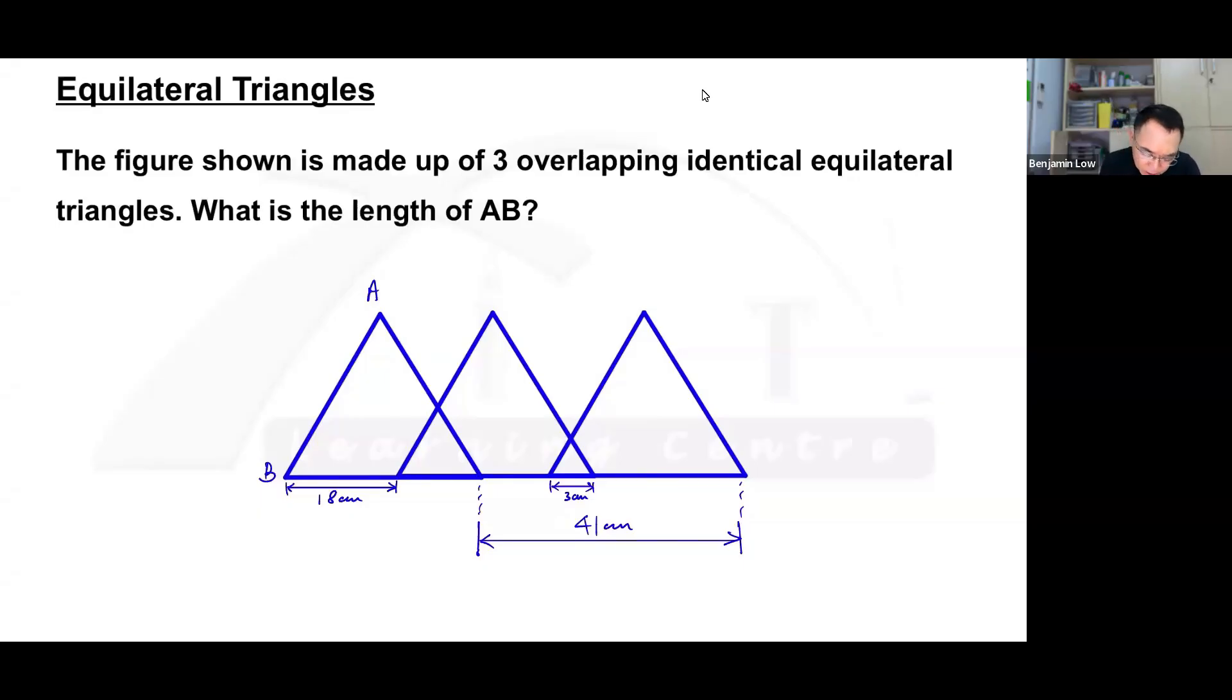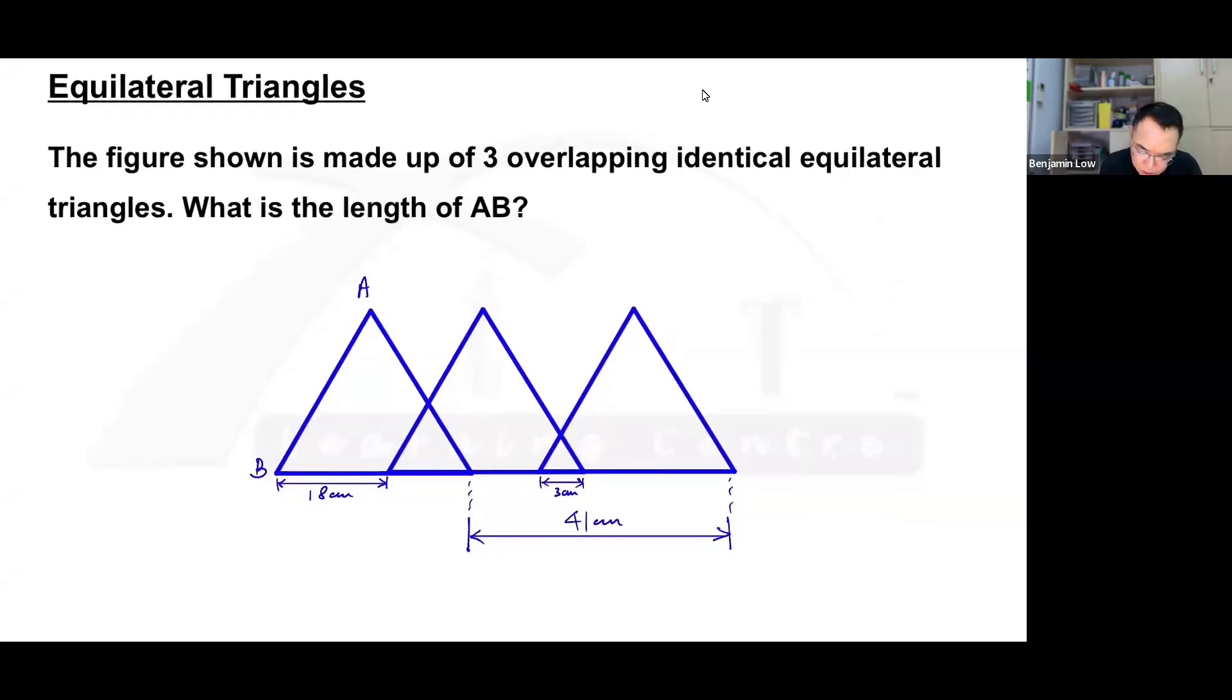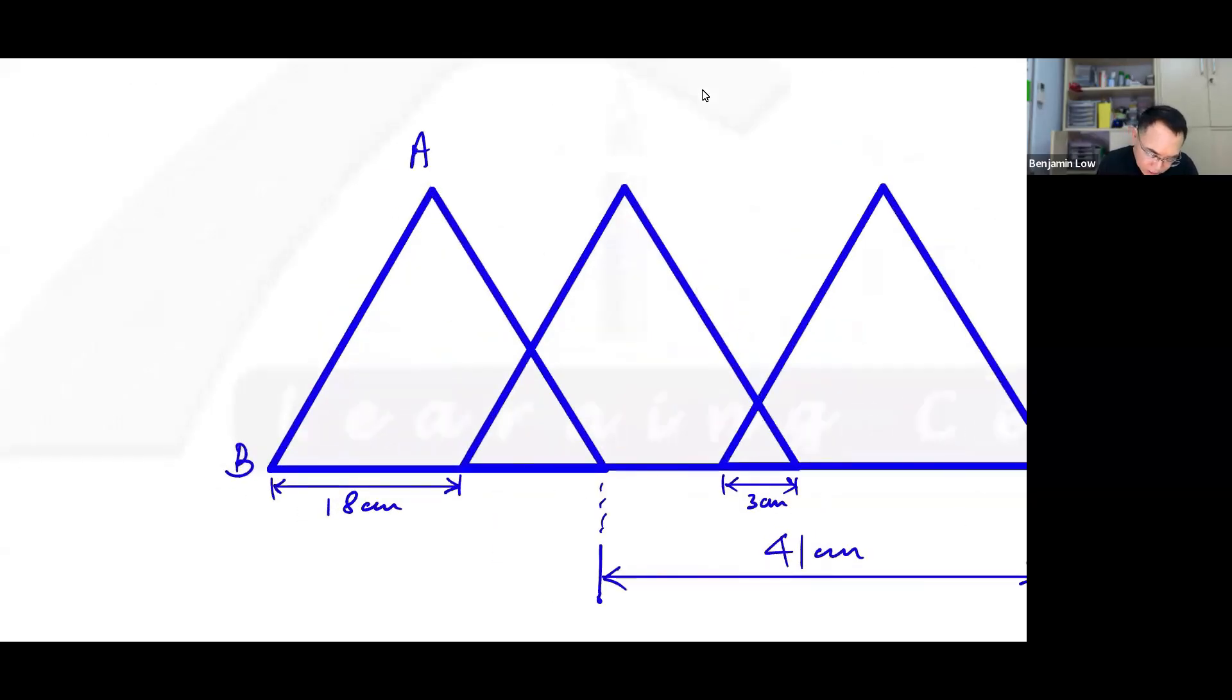The key words in this question is equilateral triangle. What's an equilateral triangle? As the word equi means equal, equilateral means equal-sided triangles. That means that this side is equal to this, is equal to this, is equal to this, and all the sides are equal. Now, in order not to dirty the diagram, I'm just going to remove this, understanding that the sides are equal.